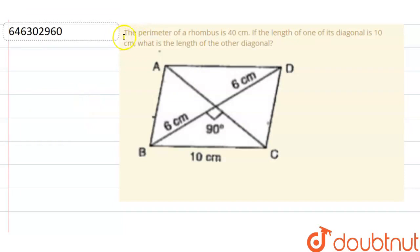Hello everyone. So our question is, the perimeter of a rhombus is 40 cm. If the length of one of its diagonals is 10 cm, what is the length of the other diagonal?